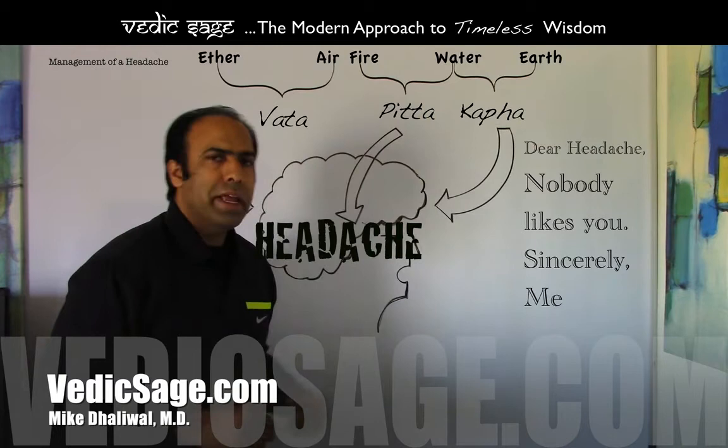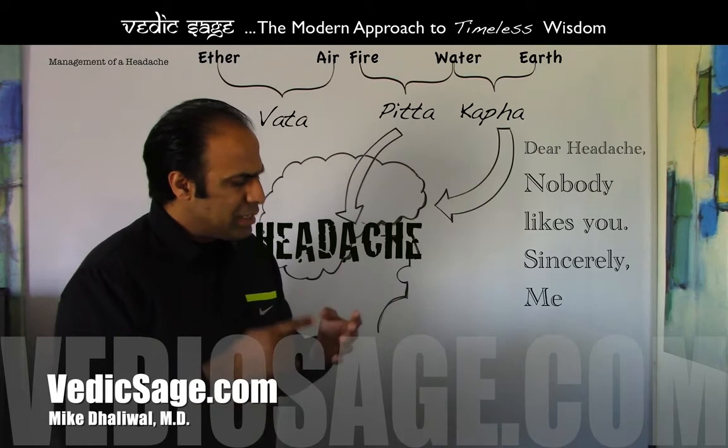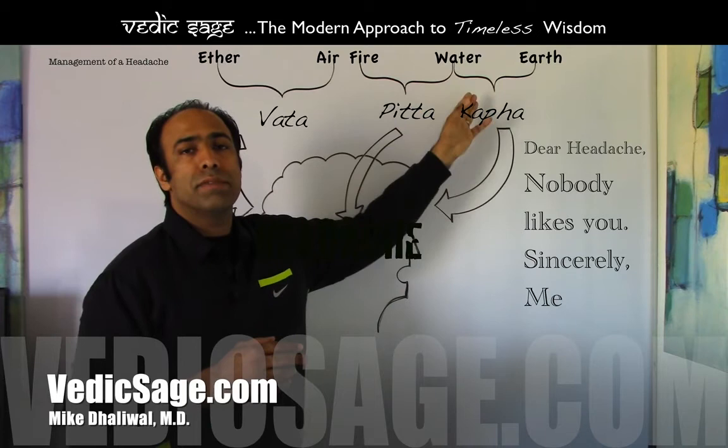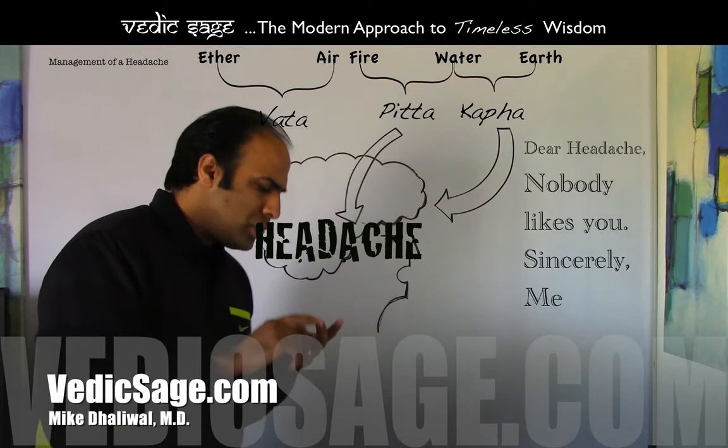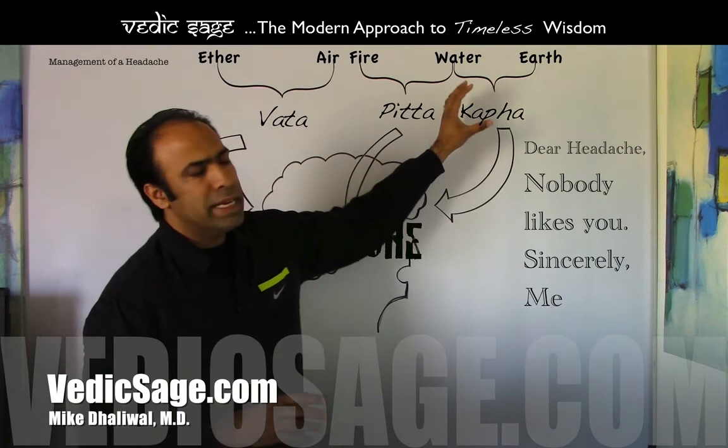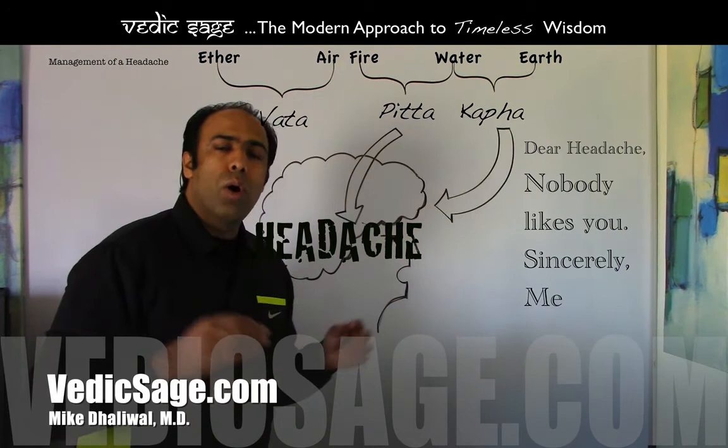Other essential oils to consider for kapha type headache are camphor, eucalyptus, cloves, cinnamon, and even cardamom oil. These oils will help to warm the kapha dosha and pacify this kapha type headache. And finally, herbs to consider for long-term management to prevent the reoccurrence of this type of headache — you'd want to consider herbs such as sitopaladi, mahasudarshana, trikatu, and even abhraka bhasma. These herbs will help to pacify and keep this kapha dosha in check to prevent further reoccurrence of kapha type headache.